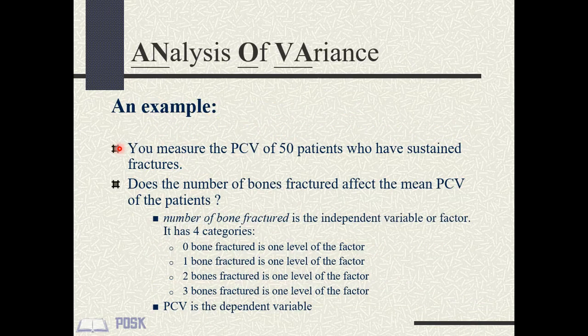In the following example, we measured the PCV of 50 patients who sustained different kinds of bone fractures. We want to determine if the mean PCV of patients with different numbers of bones fractured will be significantly different from each other. The independent variable is the number of bones fractured, with four categories (0 to 3). PCV is the dependent variable — it is continuous and, as shown in the first lecture, is normally distributed. Therefore, ANOVA can be used for analyzing its group means.